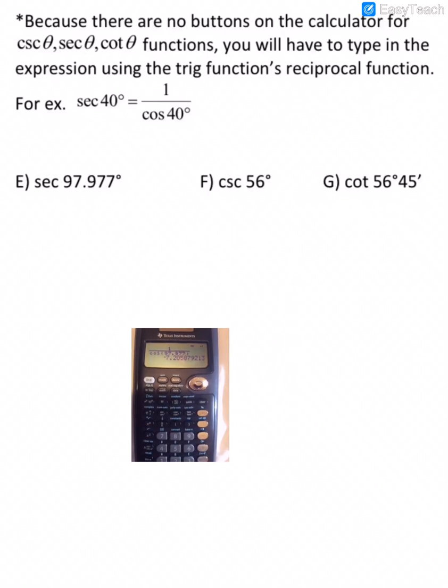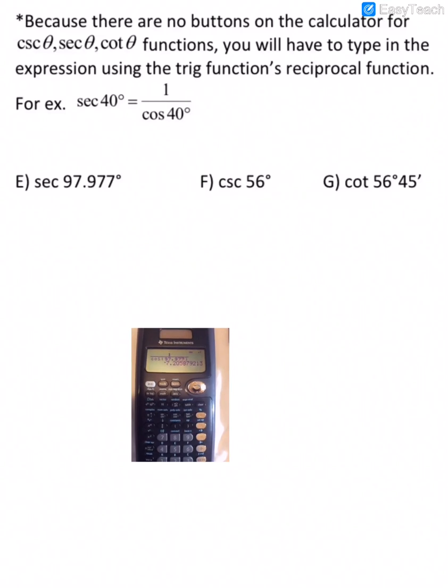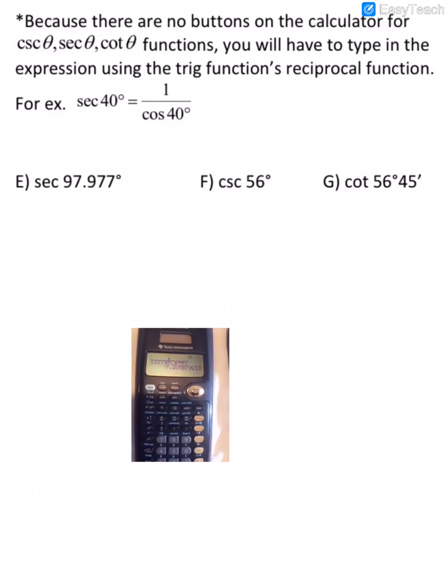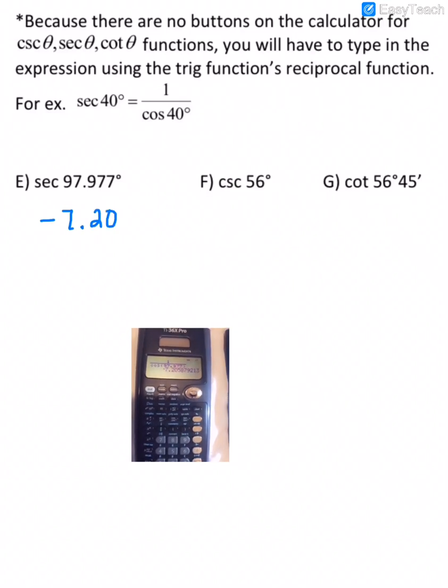And I get a negative 7 point, what are we going to, I guess we'll still go to the thousandths place. So this would be a negative 7.20, and then we round that to 6.